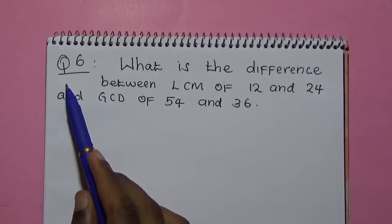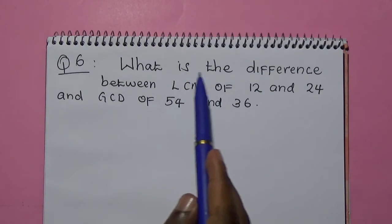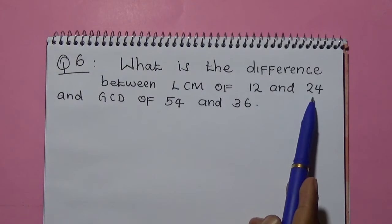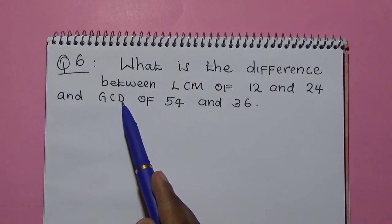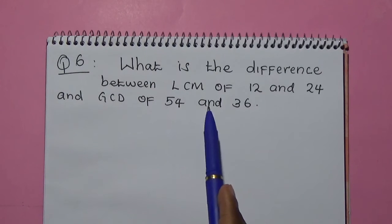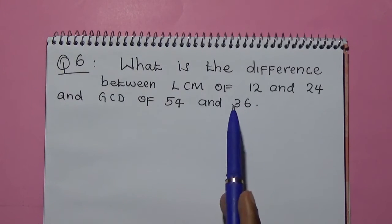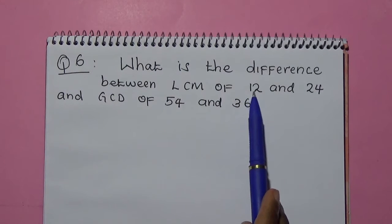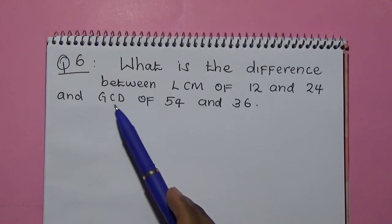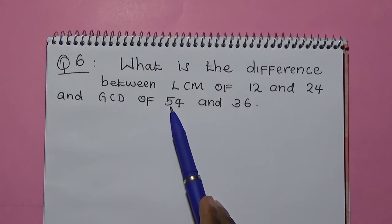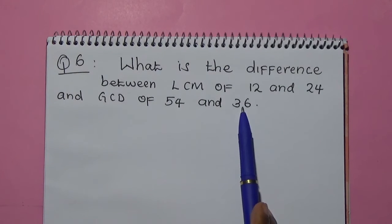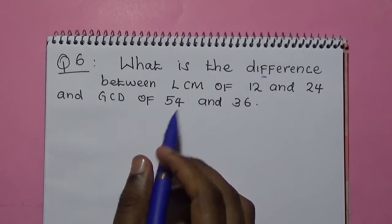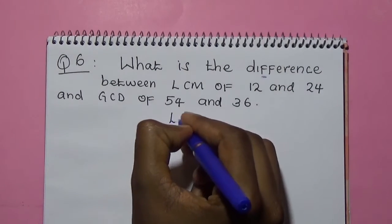We look at question number 6. What is the difference between the LCM of 12 and 24 and the GCD of 54 and 36? We are supposed to find the LCM of 12 and 24, then find the GCD of 54 and 36, and then find the difference. Let's start by finding the LCM.